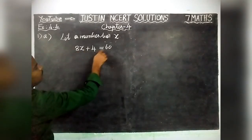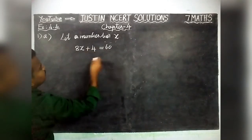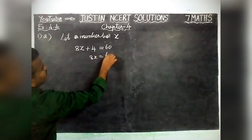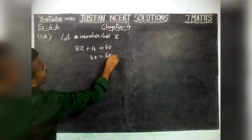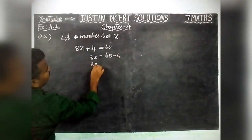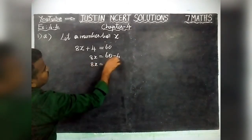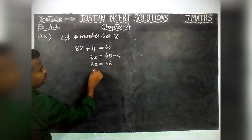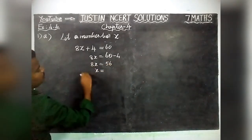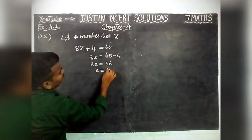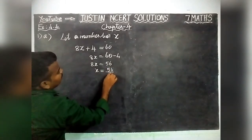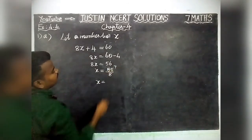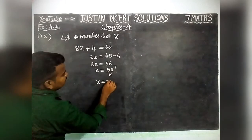Now we solve: 8X + 4 = 60. Taking +4 to the right hand side it becomes minus 4, so 8X = 60 - 4 = 56. Now 8 is going to the right hand side, it becomes division: X = 56 divided by 8. So X is equal to 7.